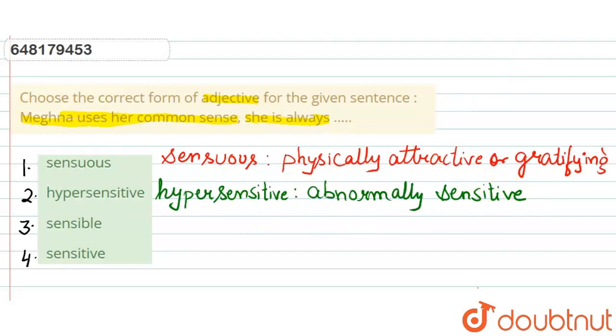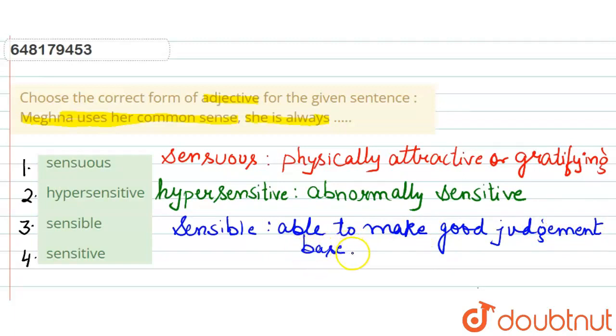Third option that we have is sensible. Sensible matlab kya hua? Sensible matlab able to make good judgment. Jho achhi judgment kar sake, usko hum kehenge sensible. Basically, wo judgment kis pe base hogi? Based on reason. Reason pe base hogi, usse hum kehenge sensible.